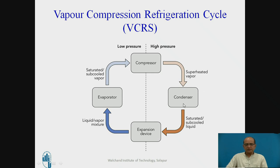After passing through the condenser, the refrigerant gets converted into liquid and that liquid goes to the expansion device, which is either a throttle valve or a capillary tube. When it passes through the capillary tube, there is a sudden drop of pressure from high pressure to low pressure, and during this drop of pressure there is a sudden drop of temperature. The temperature of the refrigerant, approximately 40–50 degrees centigrade at entry, drops suddenly to the range of minus 10 to minus 20 degrees centigrade. So this is the device where cooling of the refrigerant takes place.